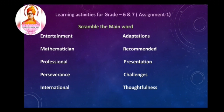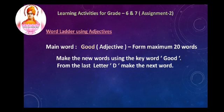The next assignment is also for both grade 6 and 7 — word ladder using adjectives. A main word will be given; the main word here is 'good', which is an adjective. What you have to do is make new words using the keyword 'good', starting from the last letter D to make the next word. You have to find a maximum of 20 words using this activity.